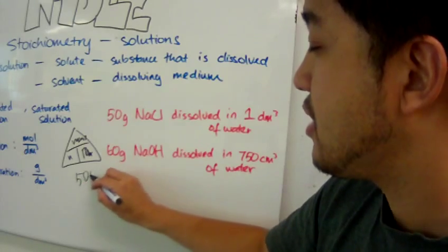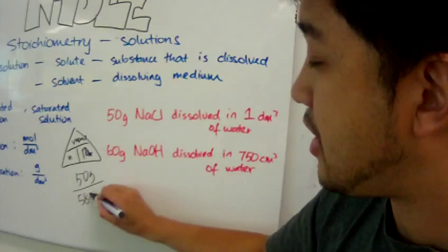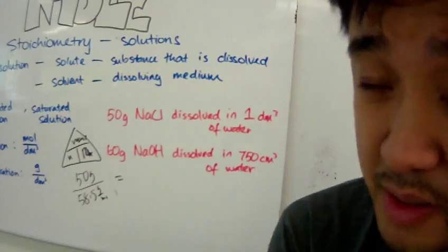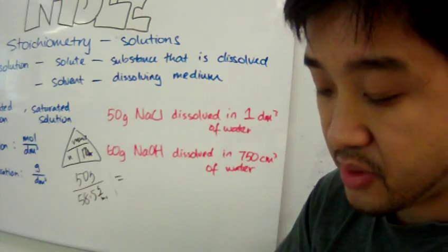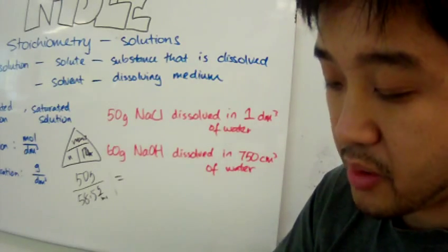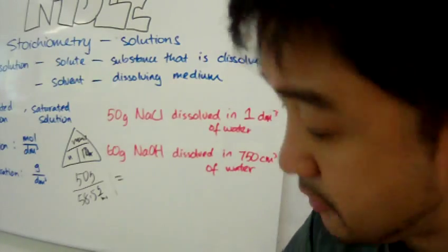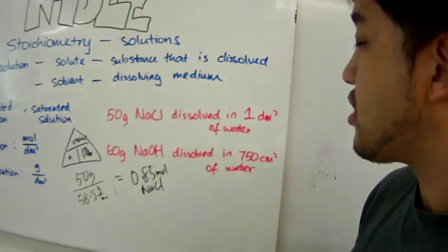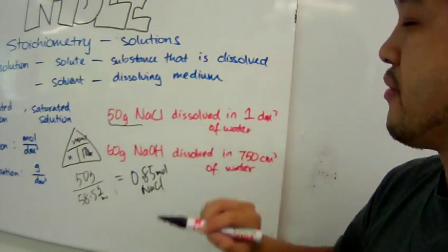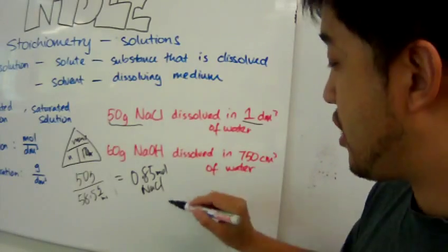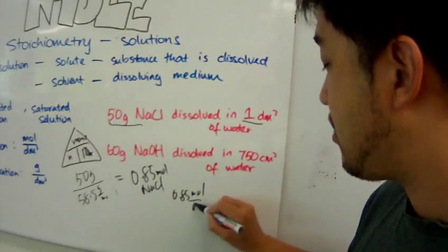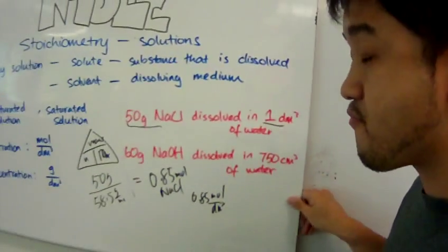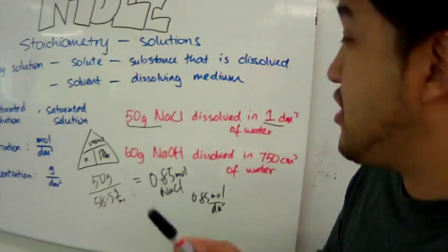Mass, which is 50 grams, divided by the molar mass of sodium chloride, which is 58.5 grams per mole. When you divide it, 50 divided by 58.5 gives approximately 0.85 moles of sodium chloride. So the concentration is 0.85 moles over 1 cubic decimetre, which equals 0.85 moles per cubic decimetre.